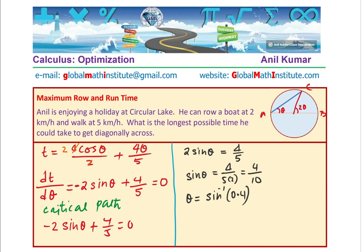So sine inverse 0.4 is equal to 0.4115. So that is what we get as the angle theta. Now, we need to find what will be the time taken when that is the angle. Time t is given to you, so we can now calculate with angle of 0.4115.